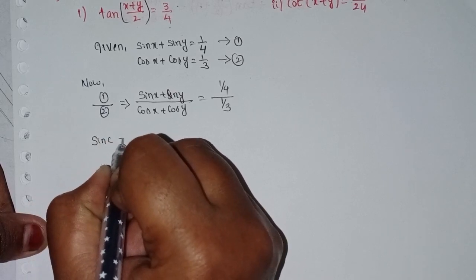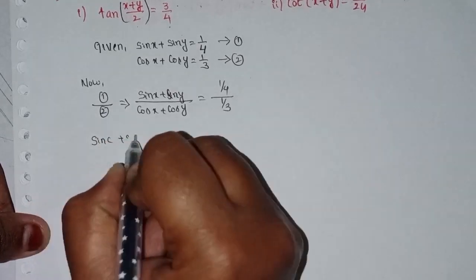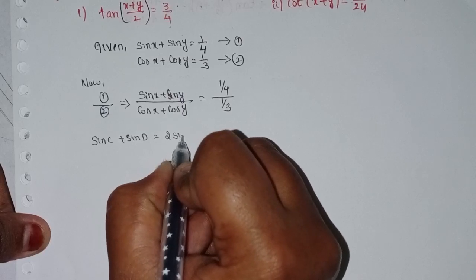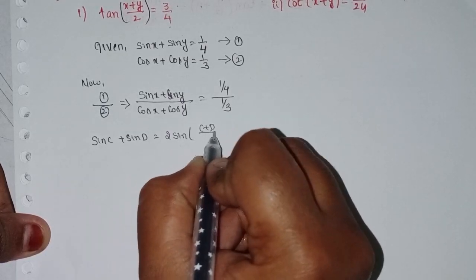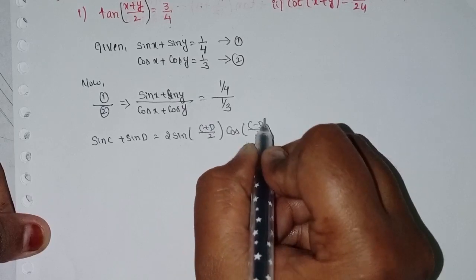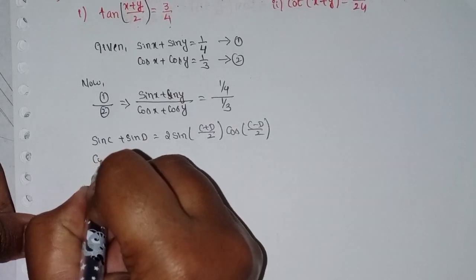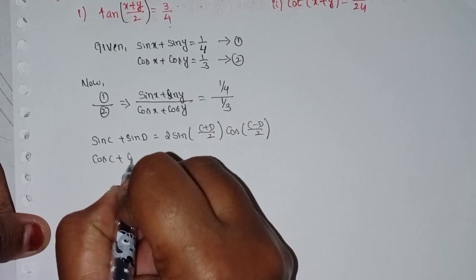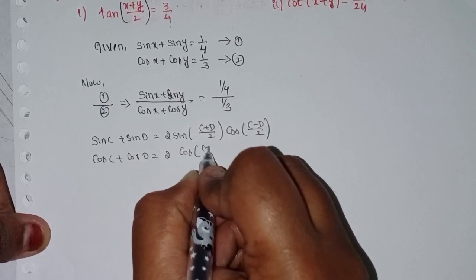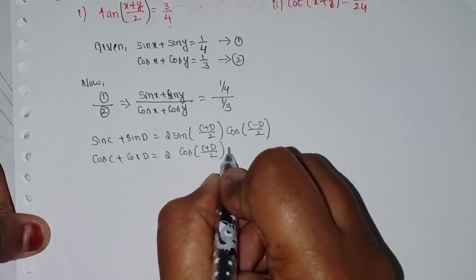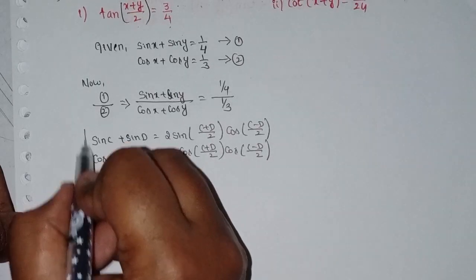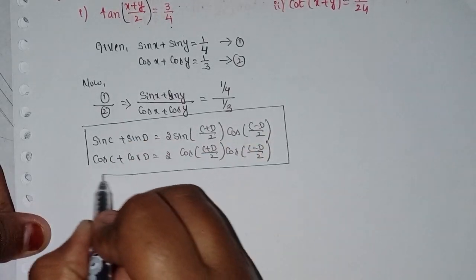The formulas to apply are: sin C plus sin D equals 2 into sin((C plus D) by 2) into cos((C minus D) by 2), and cos C plus cos D equals 2 into cos((C plus D) by 2) into cos((C minus D) by 2).